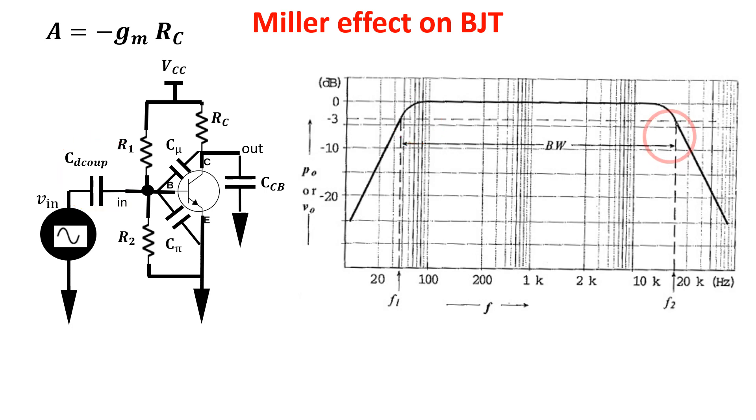The drop at high frequency comes from the pole introduced by the BJT capacitances Cpi and Cmu. The collector bulk capacitance is a little capacitance and it is not involved in the dominant pole which defines our bandwidth.